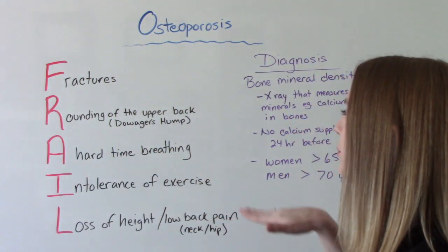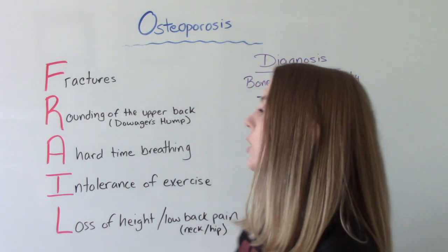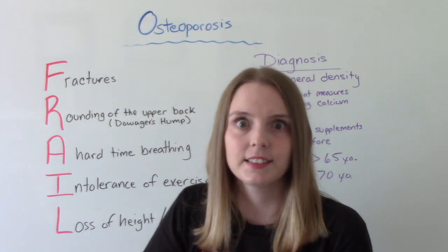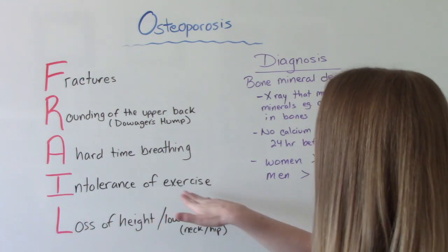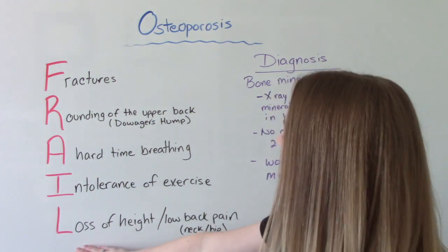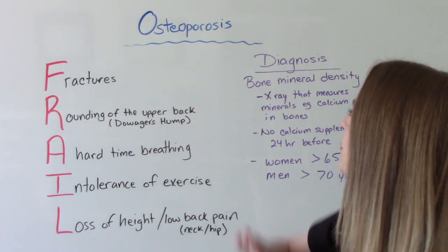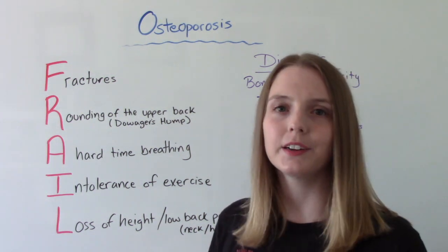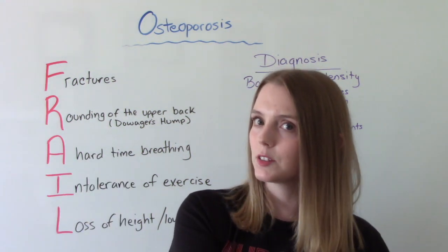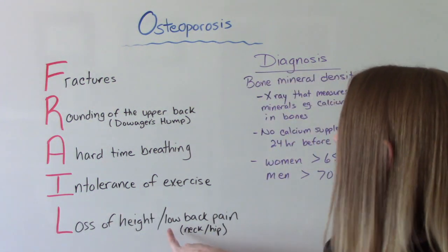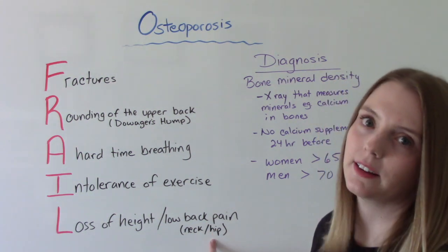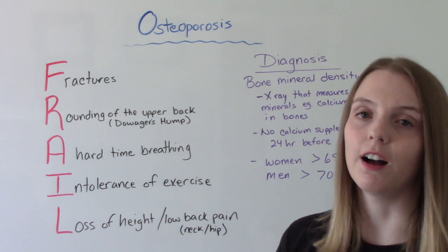A stands for a hard time breathing — they're short of breath more easily due to smaller lung capacity from compression on the discs. I is for intolerance of exercise, so they get out of breath quickly with activity. And then L is for loss of height: a lot of people with osteoporosis will notice they're shrinking — if you compare their height at this visit to their previous year's visit, they may have gotten a little bit smaller. The other L is for low back pain, and also neck pain or hip pain. These are all signs and symptoms of osteoporosis.